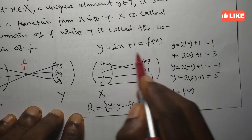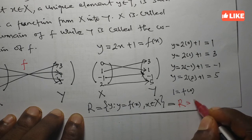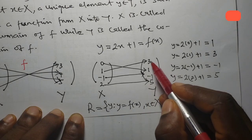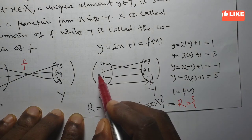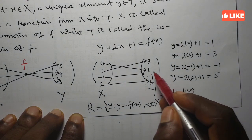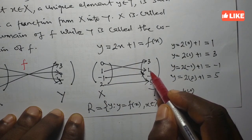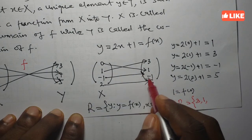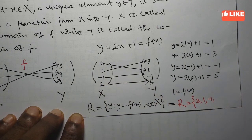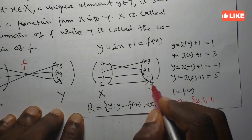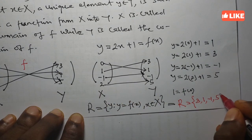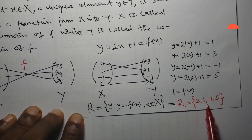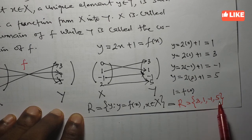So for this function, the range will be: the first image is 1 (image of 0), the next is 3 (image of 1), then -1 (image of -1), and finally 5 (image of 2). So the range is the set {3, 1, -1, 5} — this collection of image elements is what we refer to as the range.